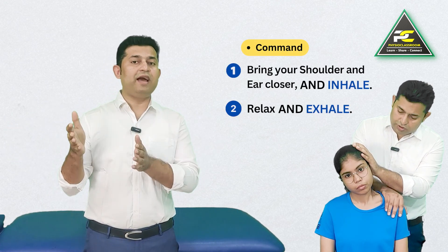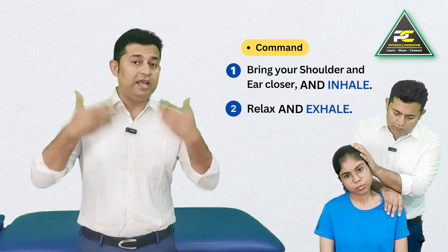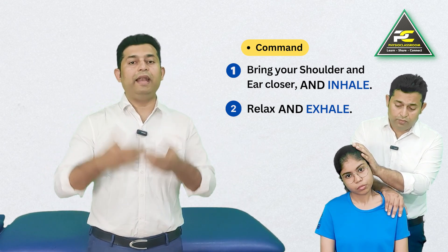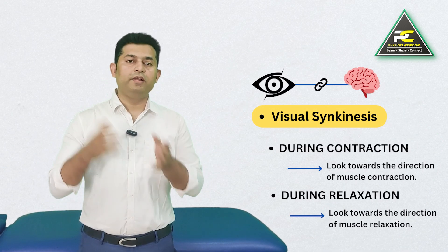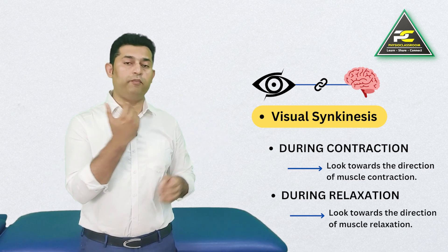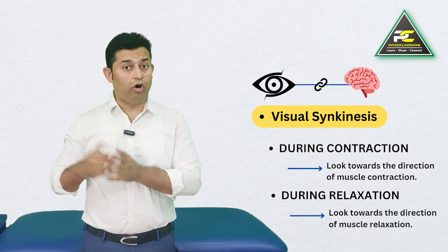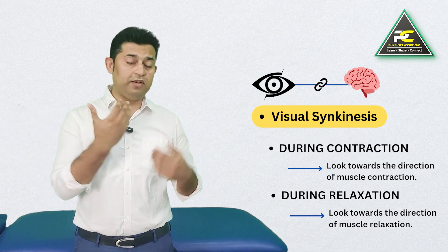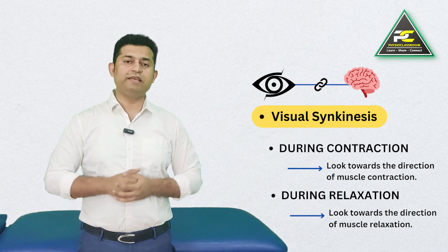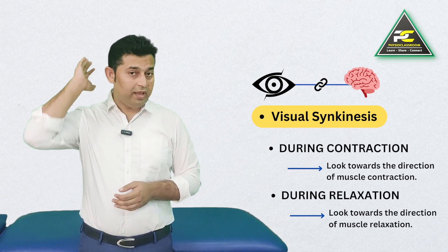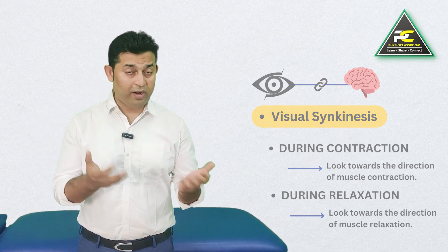Visual synkinesis suggests that the patient should always look in the direction of muscle contraction and then in the direction of muscle release, which helps facilitate muscular contraction and relaxation. For example, when activating the suboccipital extensor group for an isometric contraction, the patient can look up and push into the therapist's hand, then look down as the therapist takes the patient into the newer range of suboccipital flexion.